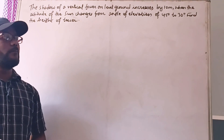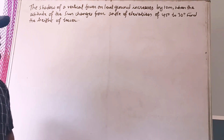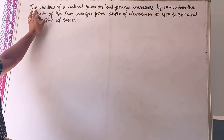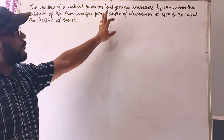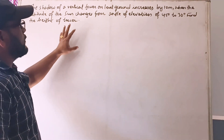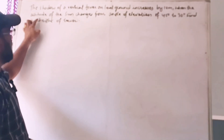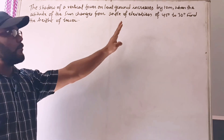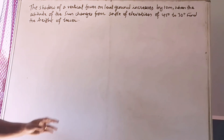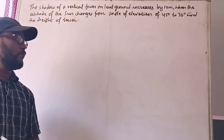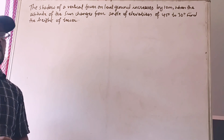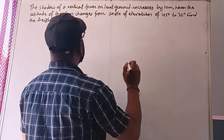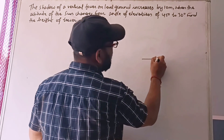The next type of question: the shadow of a vertical tower on level ground increases by 10 meters when the altitude of the sun changes from an angle of elevation of 45 degrees to 30 degrees. Find the height of the tower. This is a very important question for ICSE and Madhya Pradesh board exams.